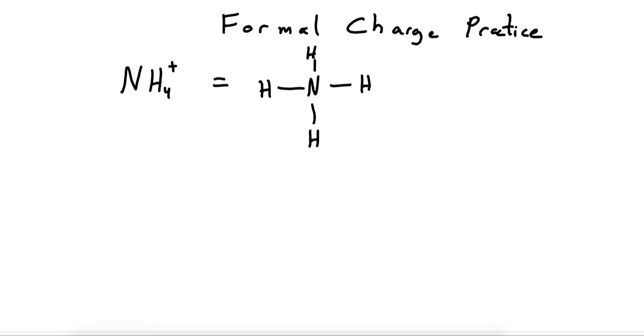Okay so we circle each atom remembering to cut every bond in half. And so we'll start with the nitrogen atom. Nitrogen has a valence of 5. So we can see each half bond has one electron in it so we're subtracting 4. So that's equal to plus 1.